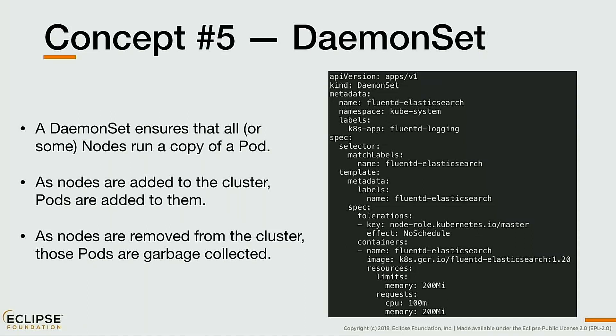DaemonSets are basically like ReplicaSets, but instead of ensuring a given number of pods are running somewhere in the cluster, they ensure one pod runs on each and every node. This is very handy for infrastructure pods like log gatherers. For example, if you want to gather logs from all pods on all nodes, you set up a DaemonSet. You can also add specifics — for instance, specifying that you don't want to install that on the master nodes where the control plane is running.